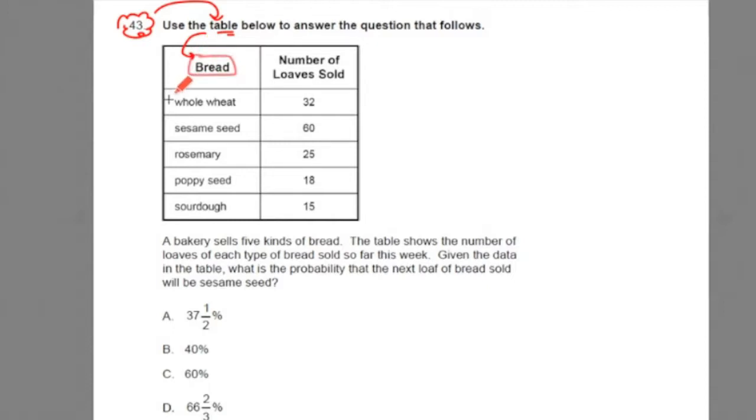And on the left side we have one, two, three, four, five different types of bread. And the right side gives us the number of loaves sold. Each one of these numbers makes up our data that we're going to use in working through this problem. Alright, let's continue to read.